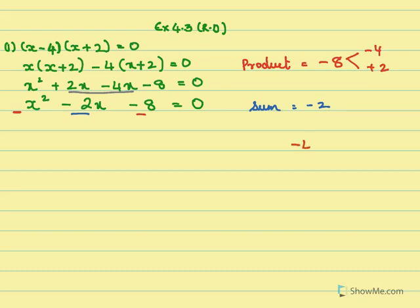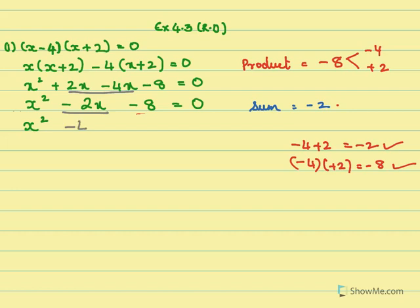Let's check: minus 4 plus 2 gives minus 2, so the sum is right. And minus 4 into 2 gives minus 8, so the product is right too. So we write x square, and for the minus 2x term we split it into minus 4x plus 2x, then minus 8 equals 0.